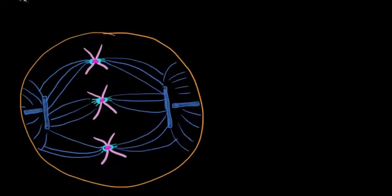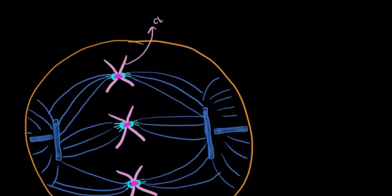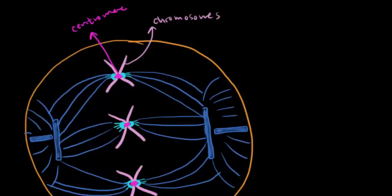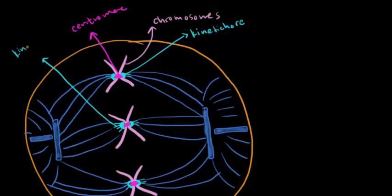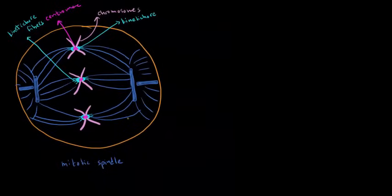In the center of the cell are the chromosomes. At the center of the chromosomes, shown in magenta, is the centromere. Outside of the centromere, in light blue, is the kinetochore — a protein on the chromosome that serves as an anchoring site for the fibers. Coming out of the kinetochore are the kinetochore fibers, and these kinetochore fibers connect to the microtubules — specifically, these are called the interpolar microtubules.